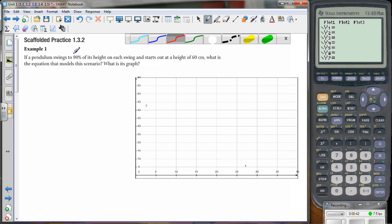We kind of have seen the equation before, but we'll see it as a graph now and talk about visually what's going on. So let's read the problem here. If a pendulum swings to 90% of its height on each swing and starts out at a height of 60 centimeters, what is the equation that models the scenario?